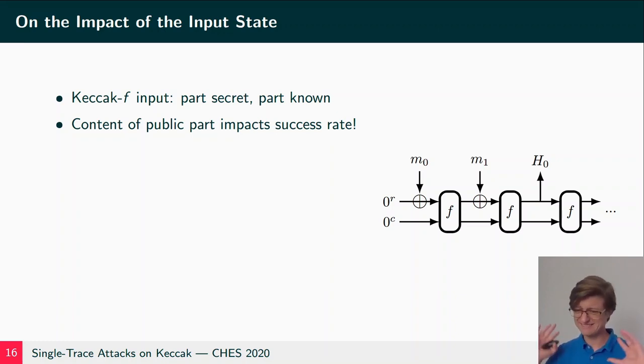Apart from these more obvious factors that influence the success rate, there's another factor that is less obvious and that is the content of the public input. Remember, the Keccak-f input - some part is secret, some part is known. And as it turns out, the content of the public part quite drastically impacts the success rate of our attack. Here we have a look at the two most extreme scenarios.